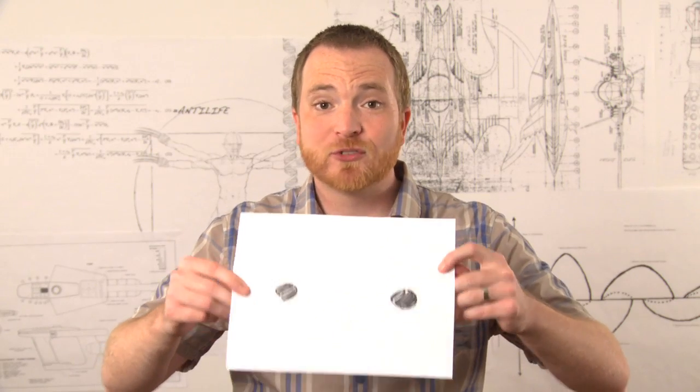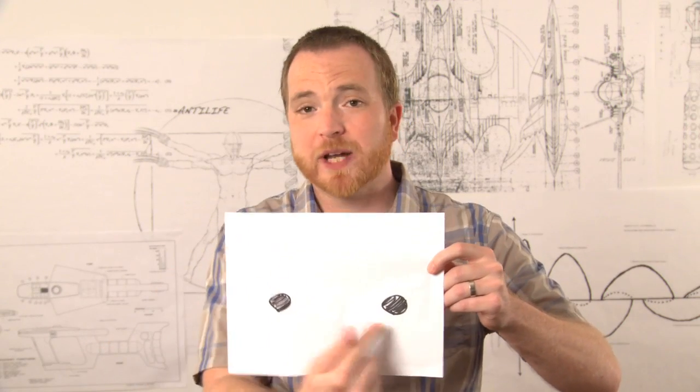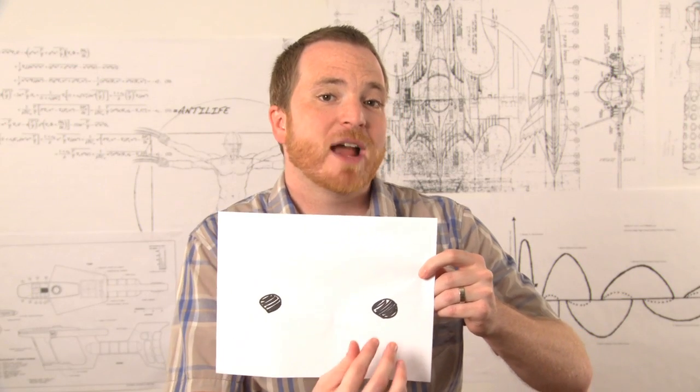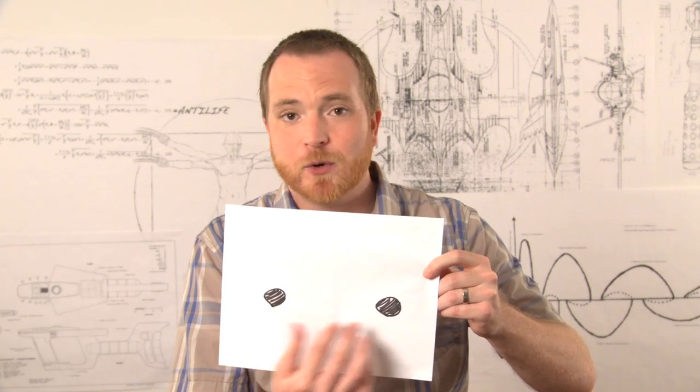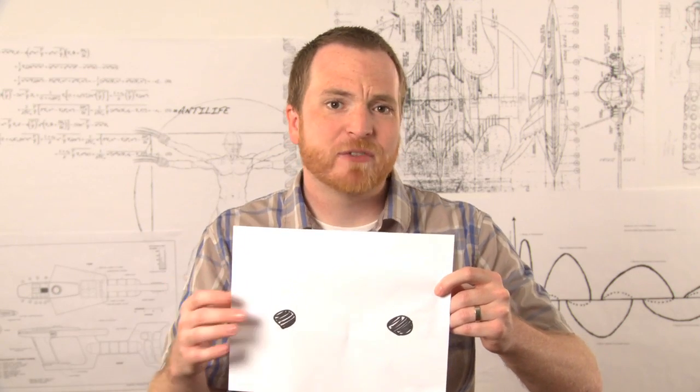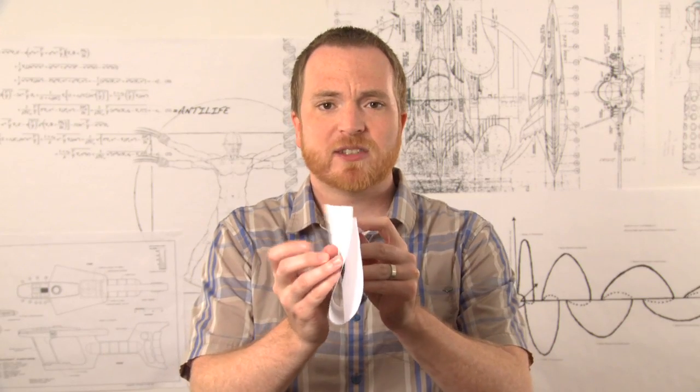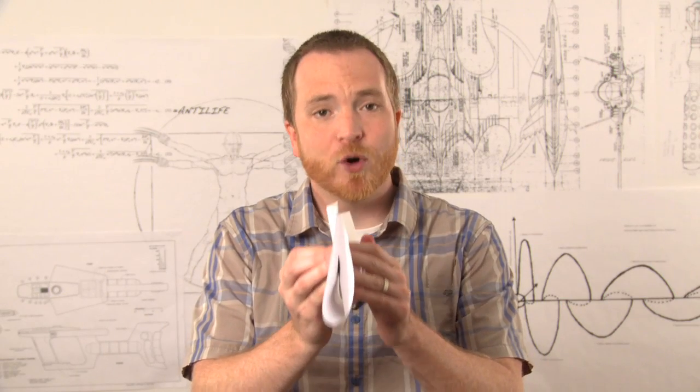The easiest way to understand this is to imagine space as a two-dimensional plane. Here are two points, and right now, the only way to get from one point to the other is to travel the distance between them on the plane. But if a large amount of energy caused disruptions and brought these two points together, they would form a wormhole.